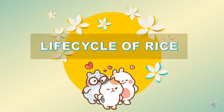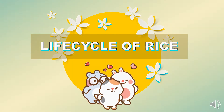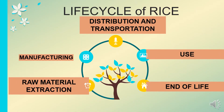The second part on this slide is the life cycle of rice. In the life cycle of rice, it has been divided into five stages. The first stage is raw material extraction, the second stage is manufacturing, the third stage is distribution and transportation, the fourth stage is the use of rice, and the last stage is end of life.